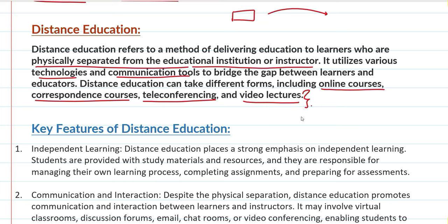How is distance education different from open learning? In open learning, once you have done admission, everything is in your hand — you manage when you give exams and control everything. In distance education, there is more structure — you follow online courses with a set semester, with video lectures provided. But in both cases, you are physically far away from the educator.